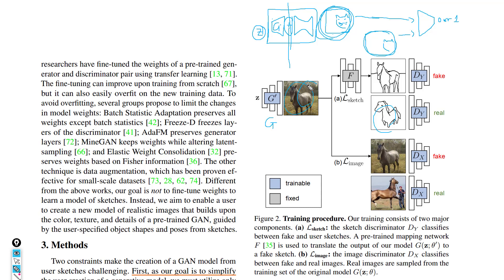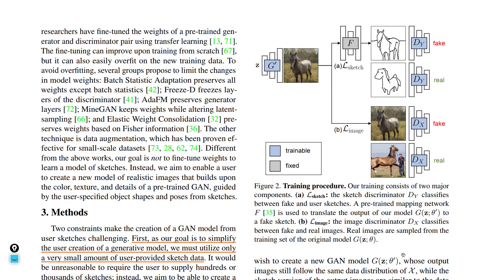One downside of only modifying weights to make images look similar to the sketch is that the output images may have reduced quality. So to preserve image quality and diversity, we still need to train on the initial dataset on which the original generator G was produced. This introduces a new loss called L_image.